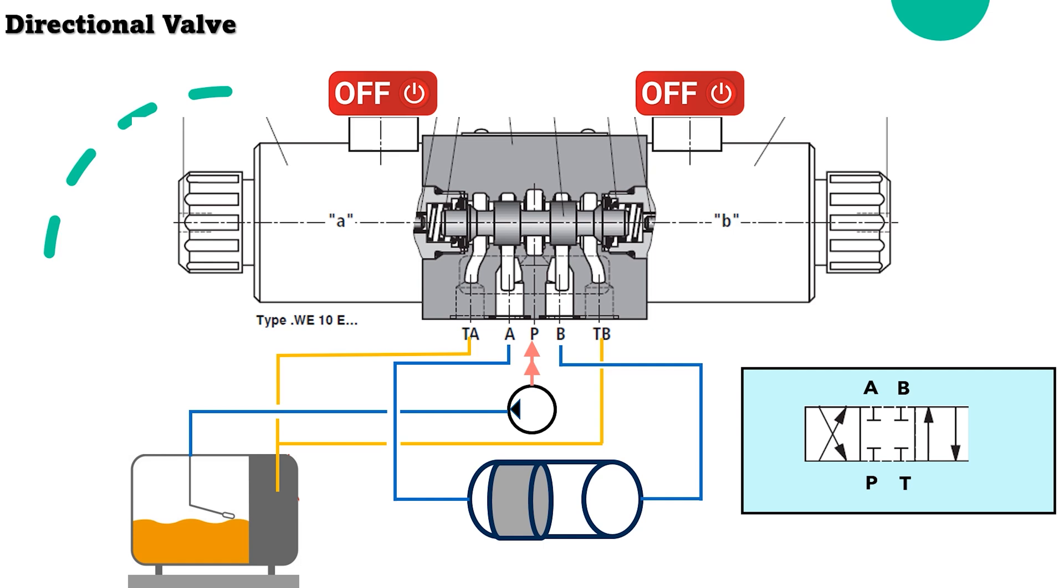When both solenoids are not energized, the spool will stay in null position and block the flow from P to A and P to B.